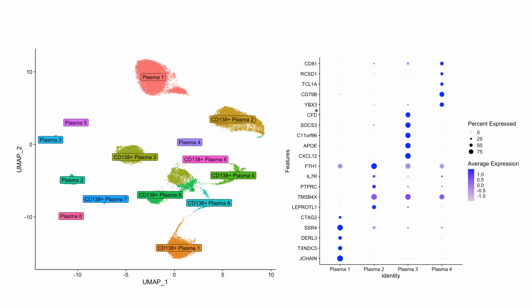For example, in plasma 4, the gene CD81 is more differentially expressed or more highly expressed in plasma 4 compared to clusters 1, 2, and 3. That's how you would read this type of plot. In the next part of the video I'll go over how you can create this type of data visualization, and I'm going to assume that you already have a Seurat object with the different clusters labeled.